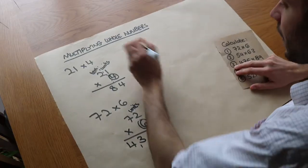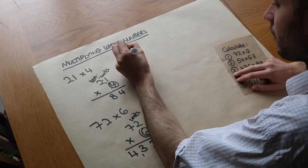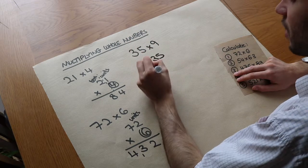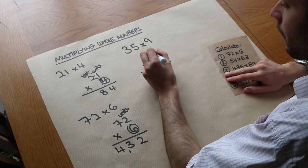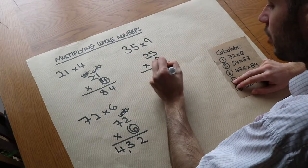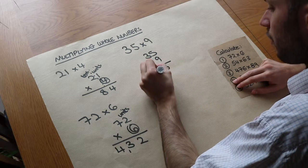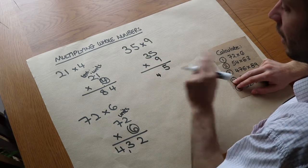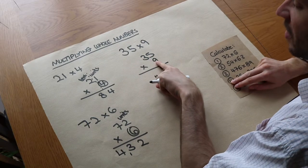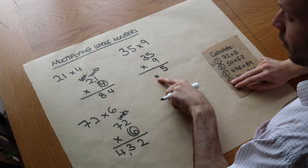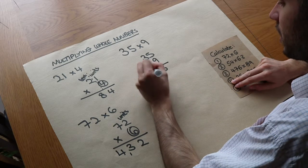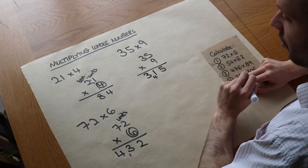Let's do another example: 35 multiplied by 9. We set up 35 times 9 in columns. First, 5 times 9 is 45, so we write 5 units and carry the 4, because we have 4 tens. Then we do 3 times 9, which is 27, plus the extra 4 gives 31. So we put 31 there and end up with 315.